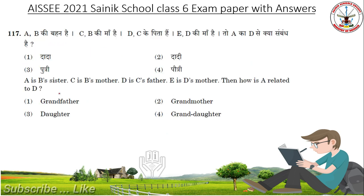A is B's sister, C is B's mother, D is C's father, E is D's mother. Then how is A related to D? Answer: Granddaughter.